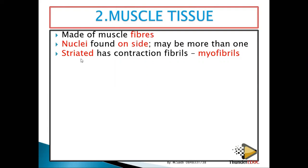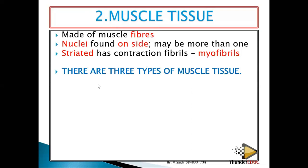Striated means the muscle has stripes — if it were a shirt, you would call it checked. The stripes are called myofibrils, and they are very important in contraction. If a muscle contracts but does not relax, you get what is called a muscle pull — you won't be able to move, because contraction has occurred but relaxation has not taken place.